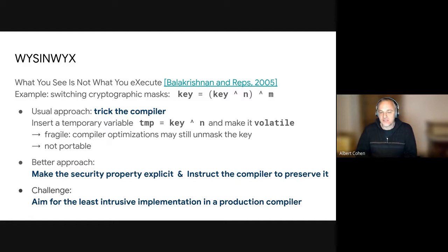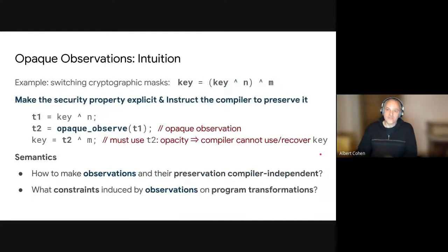And so a better approach is to try to make this property we want to preserve explicit. And obviously also to instruct the compiler to preserve that property, not only at the source level, but also preserve that property through the flow. And one additional challenge we take is we don't want to design a new compiler that has these capabilities. We want to make this the least intrinsic possible and instruct a production compiler, in this case LLVM, to behave properly in the presence of security properties like this one.